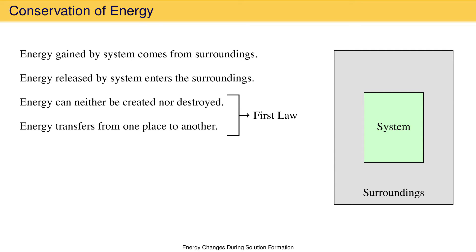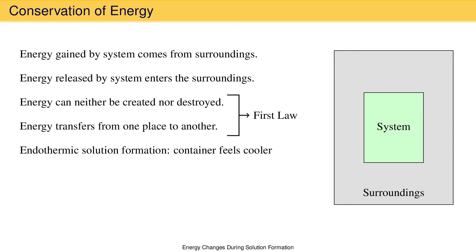A consequence of the first law is that you can detect whether making a solution is endothermic or exothermic by putting your hand on the container. If making the solution is endothermic, energy will leave your hand — part of the surroundings — to enter the system, and your body will interpret this as something cold; the container gets cooler. If making the solution is exothermic, energy will enter your hand as it leaves the system, and your body will interpret this as something warm or hot; the container gets warmer.